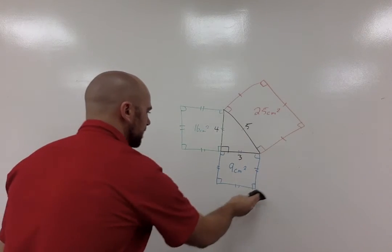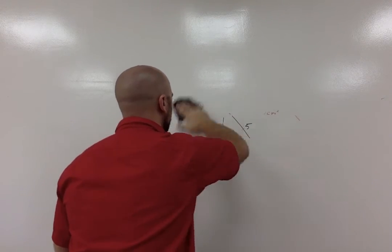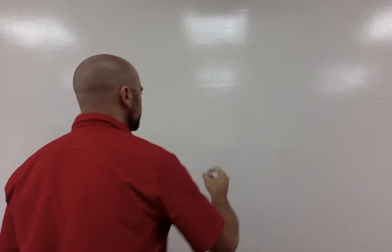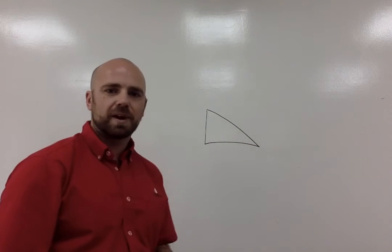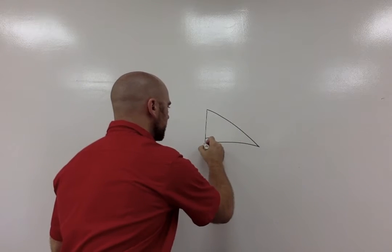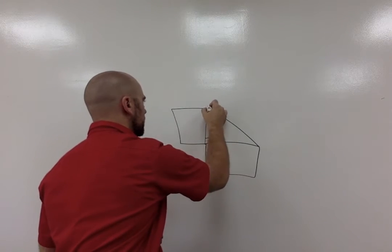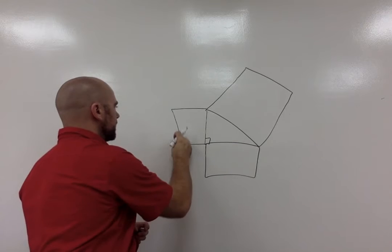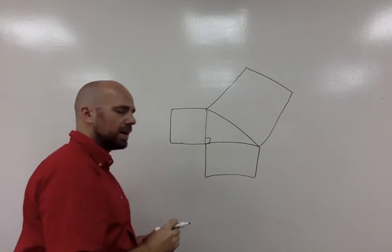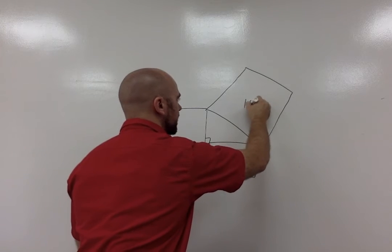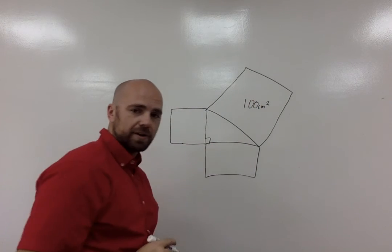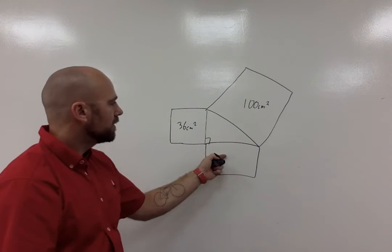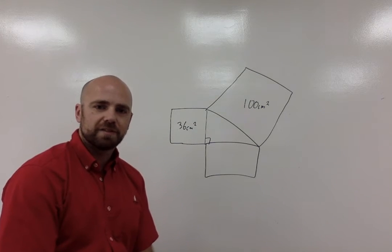If we have our triangle, we have our squares, this is a 90-degree angle. I'm just going to use all black for this example. Let's say that this here has an area of 100 centimeters squared. Let's say that this one has an area of 36 centimeters squared. What can we determine that the area of this one is going to be?